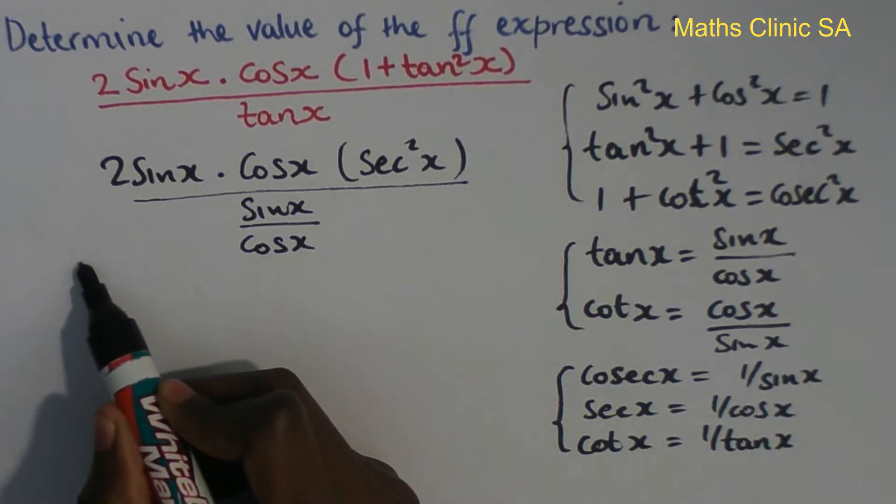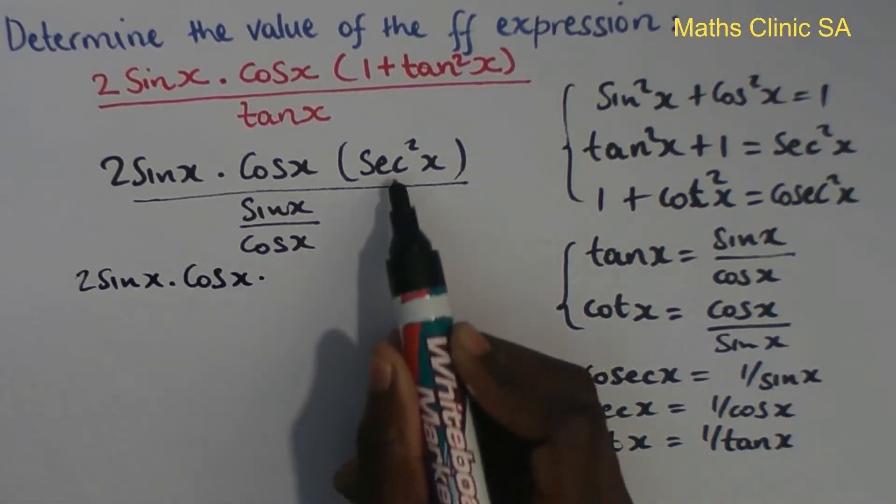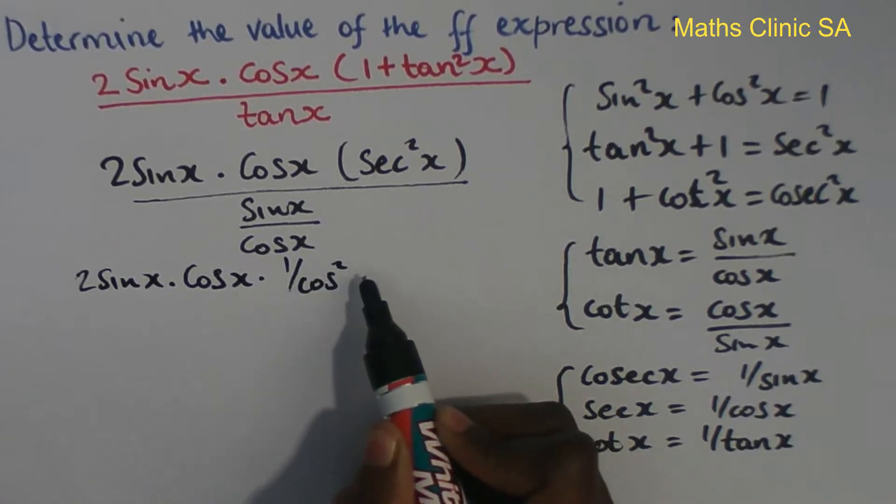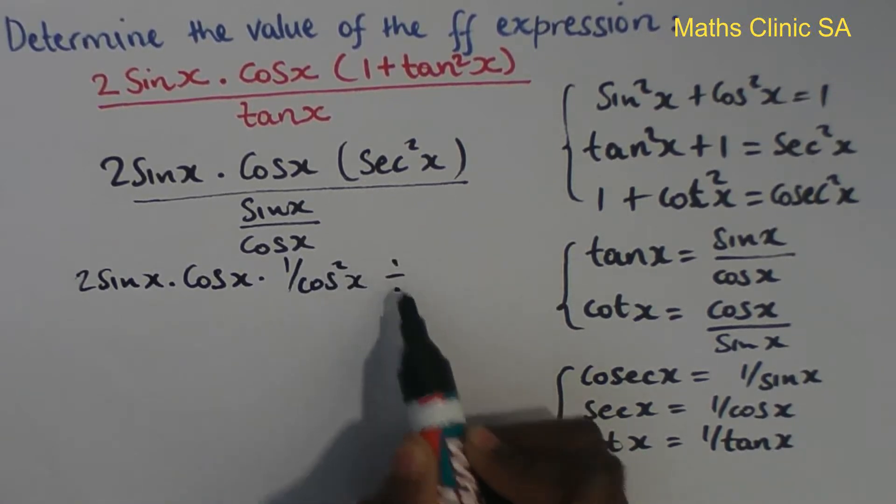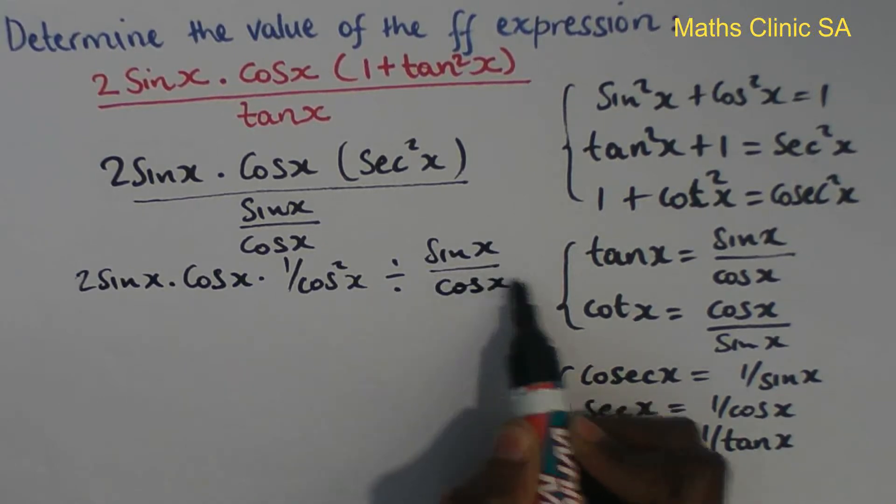cos of x times sec squared, which is 1 over cos squared x, divided by sin x divided by cos of x.